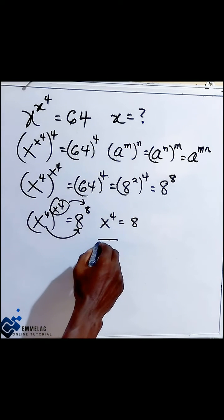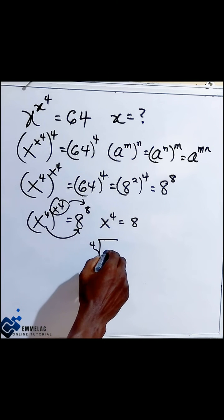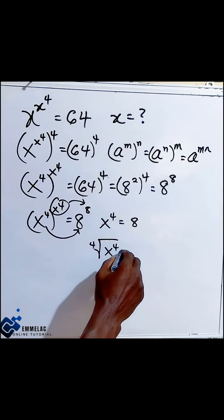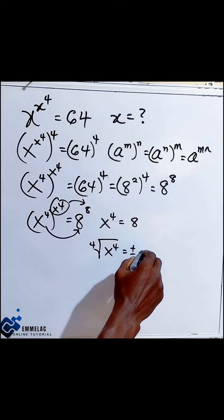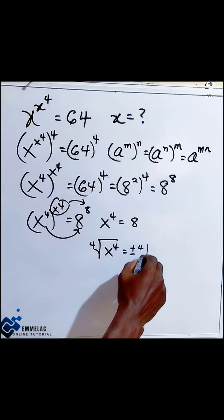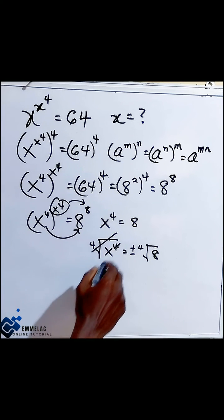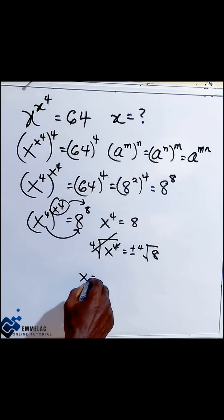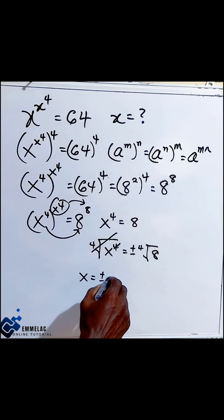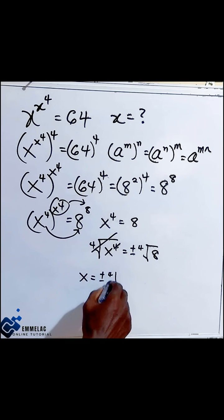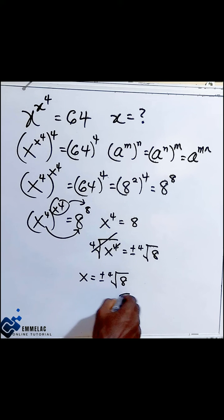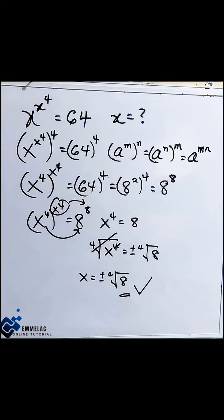So we can say that x raised to the power of 4 equals 8. Now we can take the fourth root of both sides. This will eliminate the exponent. So our x will now be plus or negative the fourth root of 8. Thank you and God bless you.